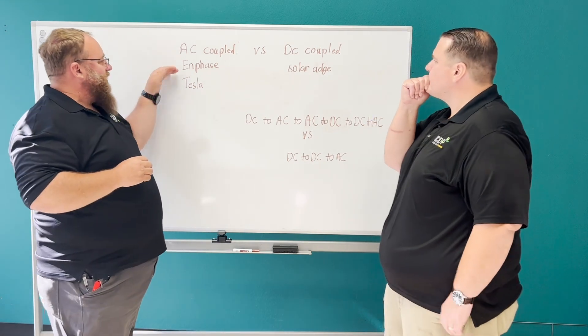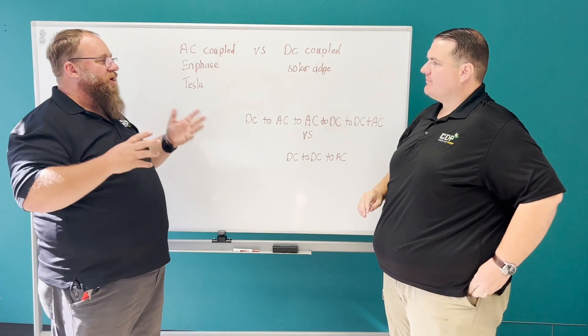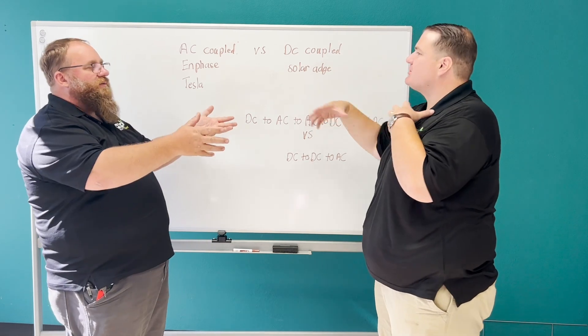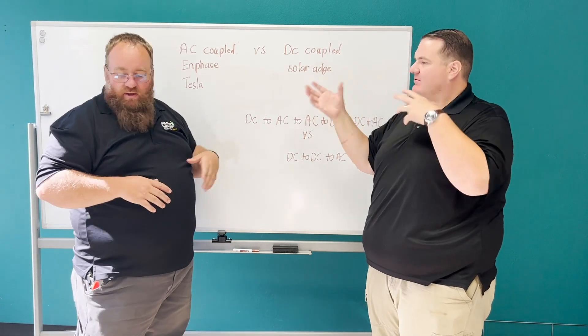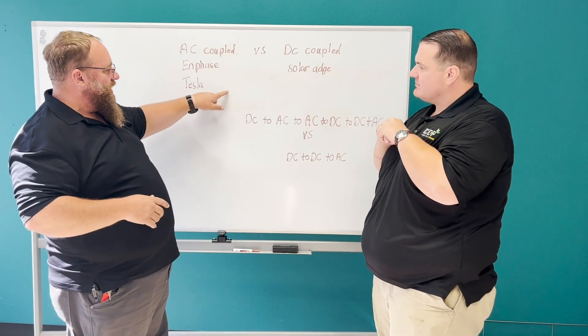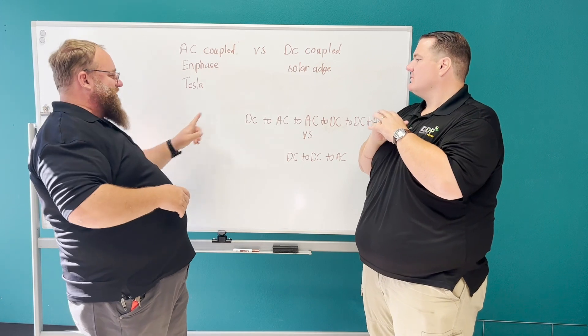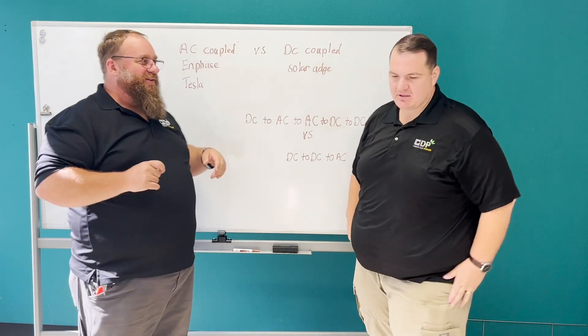When we get into Enphase, why would I pick an Enphase over a SolarEdge? Chopped up roofs. You mean like on a two-story house where they have to put it in a bunch of different multiple positions? Okay. So I have to put panels on the north side, south side, east side, west side. That makes sense.